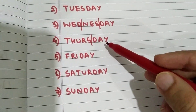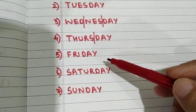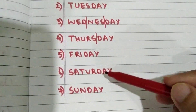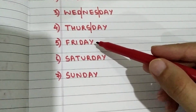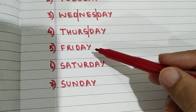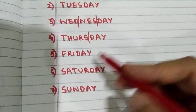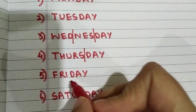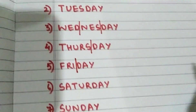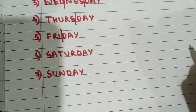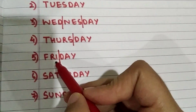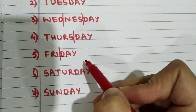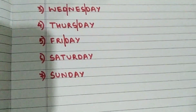Now let us come to the fifth day of the week. We are nearing Sunday! The fifth day of the week is Friday. What is the spelling of Friday? Very simple spelling: F-R-I-D-A-Y. Friday. It is a very simple spelling to learn.